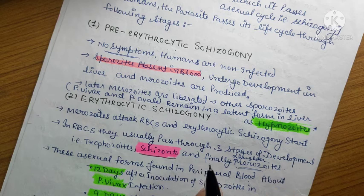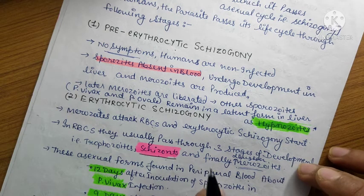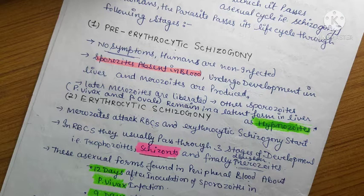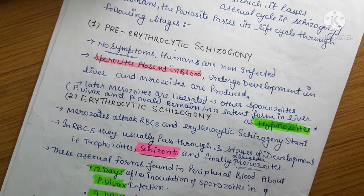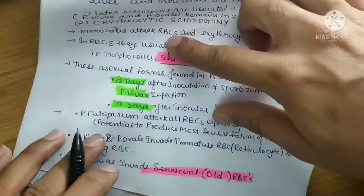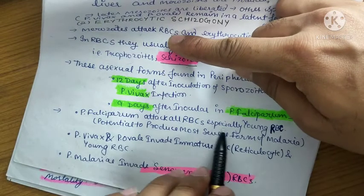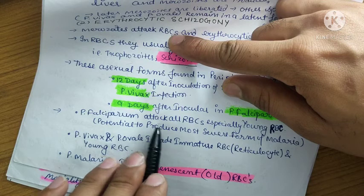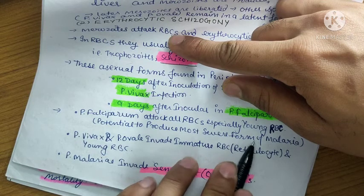The asexual form is found in peripheral blood 12 days after the incubation period in Plasmodium vivax infection, and 9 days in Plasmodium falciparum. Plasmodium falciparum attacks especially young RBCs, which gives it the potential to produce the most severe form of malaria.